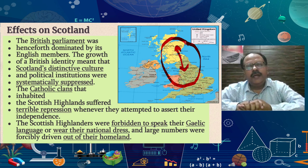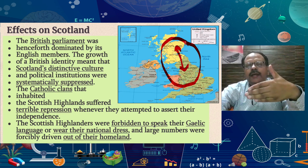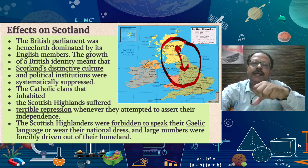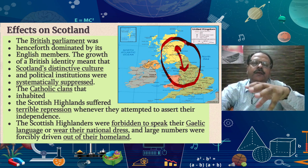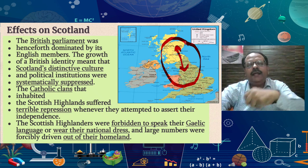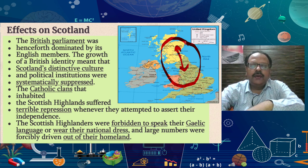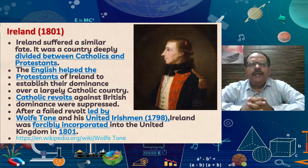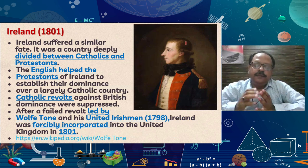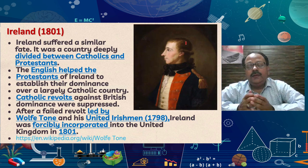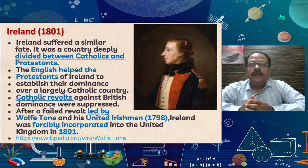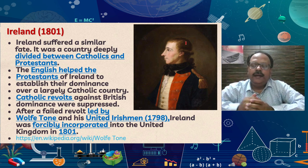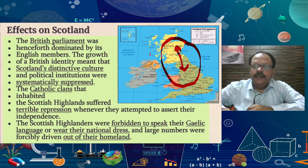The people of England started to dominate over Scotland, and they also established their cultural identity over that area. Students, this is known as the Act of Union. Now here we can see another part related to the unification of Britain — Ireland.